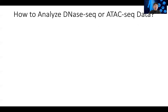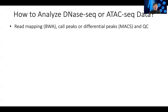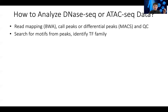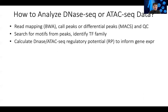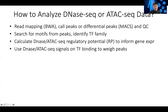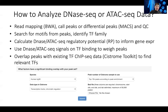In terms of how to analyze this data, it's very similar to histone mark ChIP-seq: you do read mapping, call peaks, and perform QC. You can search for motifs from the peaks, especially near enhancer regions — if you remove all annotated transcription start sites from the reference genome, you can identify the TF family. You can use the DNase or ATAC-seq regulatory potential to tell us which genes are potentially active in the cell, and use the signals to weight TF binding at different locations.